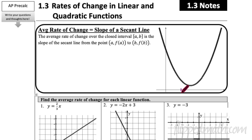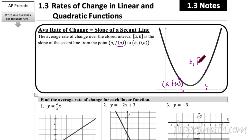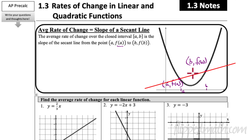So maybe a is right here — let's label the x-value as a, and the y-value as f(a), closing that off as a coordinate point (a, f(a)). Over here we have a value of b, so the point would be (b, f(b)). The secant line goes through these two points, and the slope of that secant line gives you the average rate of change.